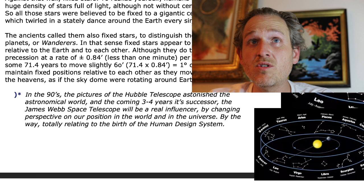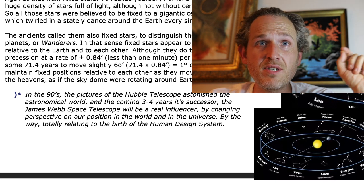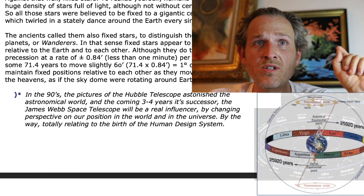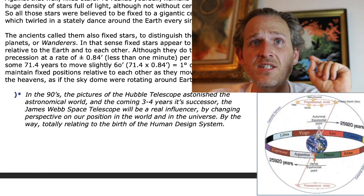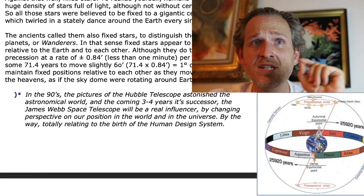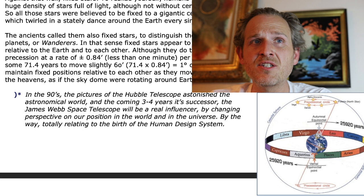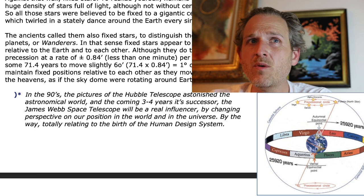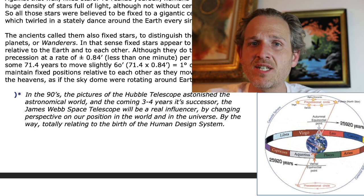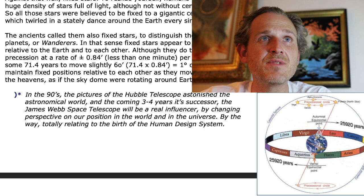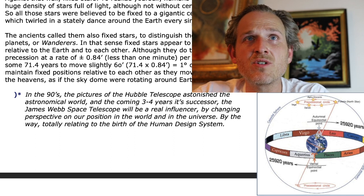Although not without certain tools. In the 90s, the pictures of the Hubble telescope astonished the astronomical world. In the coming three to four years, its successor, the James Webb Space Telescope, will be a real influencer, by changing perspective on our position in the world and in the universe — totally relating to the birth of the Human Design system. An interesting point from Jan van den Berg, our author here, in this Crash Course on Stars.